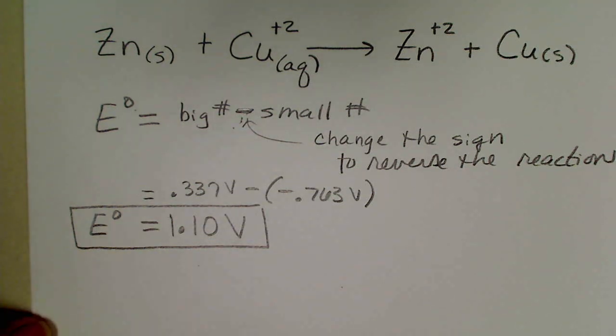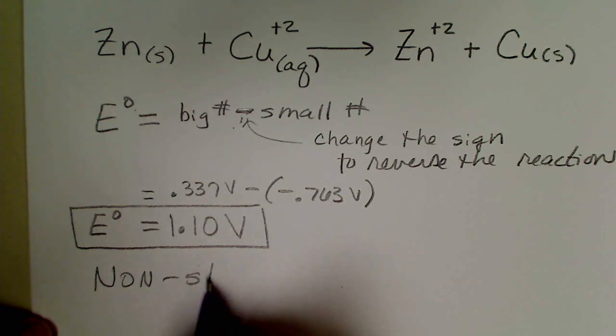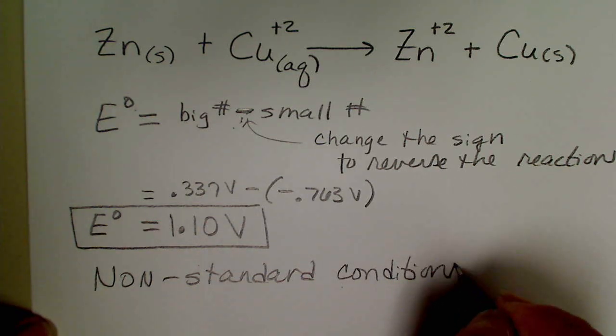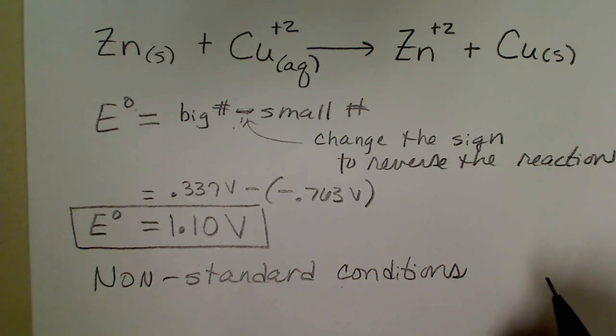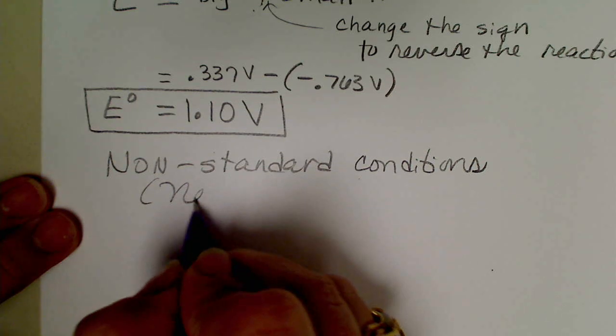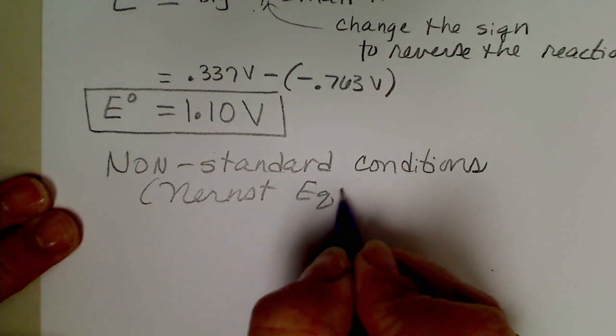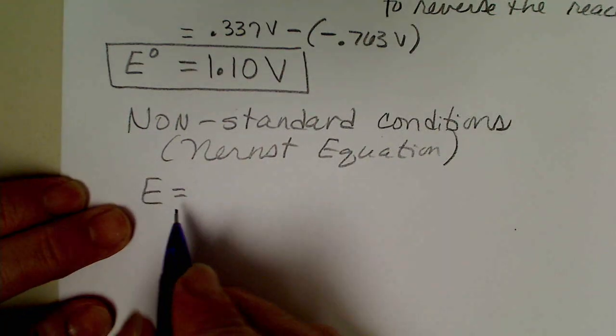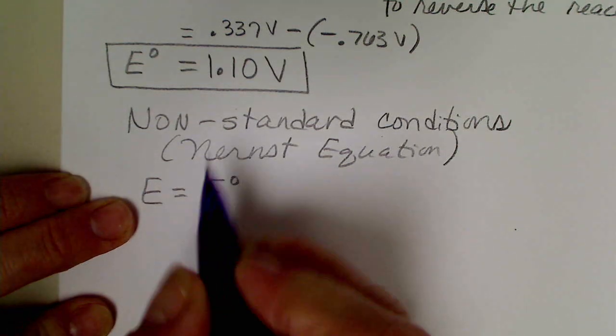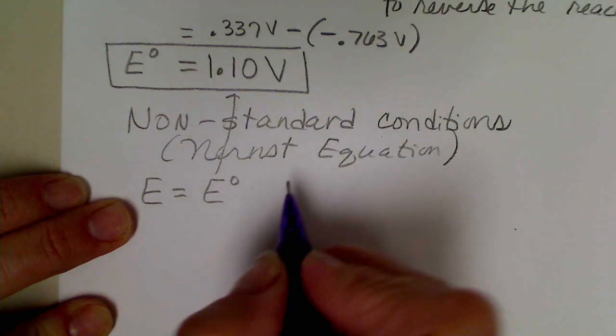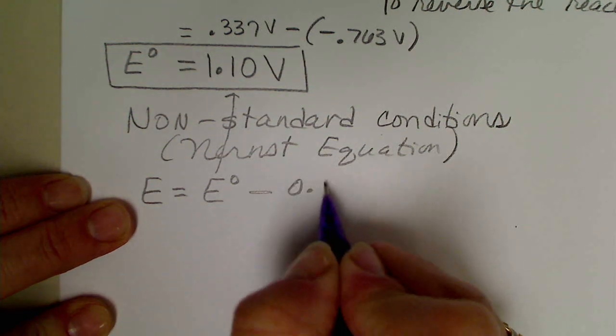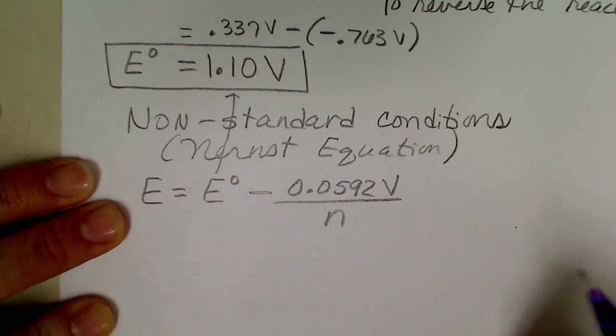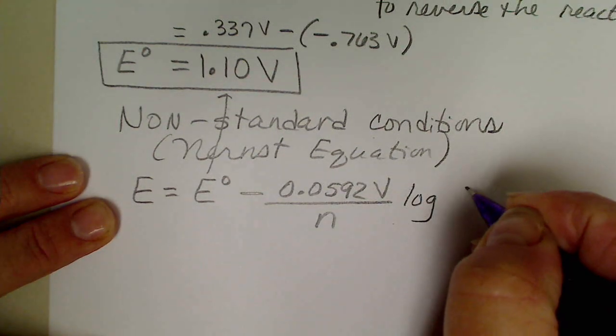And now what I would like to do is run this under non-standard conditions. So that's where we use the Nernst equation. And our temperatures could vary. What I'm going to vary are the concentration units. So the non-standard conditions, which is the Nernst equation, means the potential would be the same cell potential that we measured above, using the appendix, minus 0.0592 volts, divided by n, the number of electrons transferred. And this uses the log of Q.